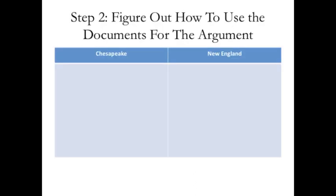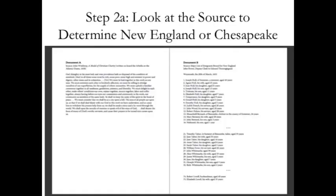Now that we know what the prompt is, step 2 is to figure out how to use the documents in the argument to write a paper. The best thing to do is to take the prompt and break it down into the different sides of the argument. We have the Chesapeake and New England colonies, so we'll go through each document and figure out which side it belongs to — is it telling us about the Chesapeake region or the New England region? The Chesapeake region is the southern colonies like Jamestown; the New England region is the northern colonies like Massachusetts.